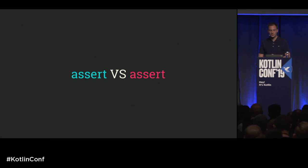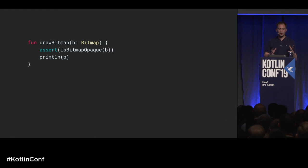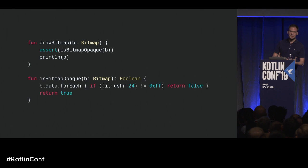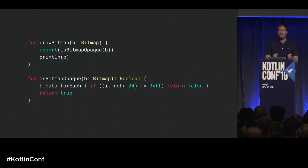The first feature we're going to talk about is assertions, and we're going to compare them to Java assertions. Here's a very simple example: a drawBitmap function that takes a bitmap. Our drawing is just a println command, and we call the assert function that comes standard with Kotlin. Our assertion is isBitmapOpaque, which we assume is a heavy operation — it goes over every pixel in the bitmap, checks the alpha channel, and if one is not completely opaque, returns false. The point is that we're doing something very time-consuming in our assertion.